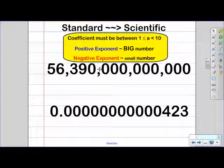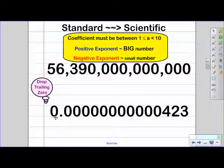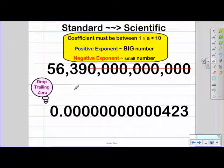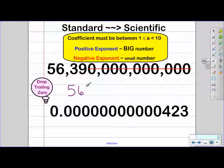So let's start with our big number here. When we're writing this in shorthand, keep in mind that we're going to be dropping our trailing zeros. So all of these zeros we're actually going to drop. That's going to leave us with our non-zero numbers: five, six, three, and nine.